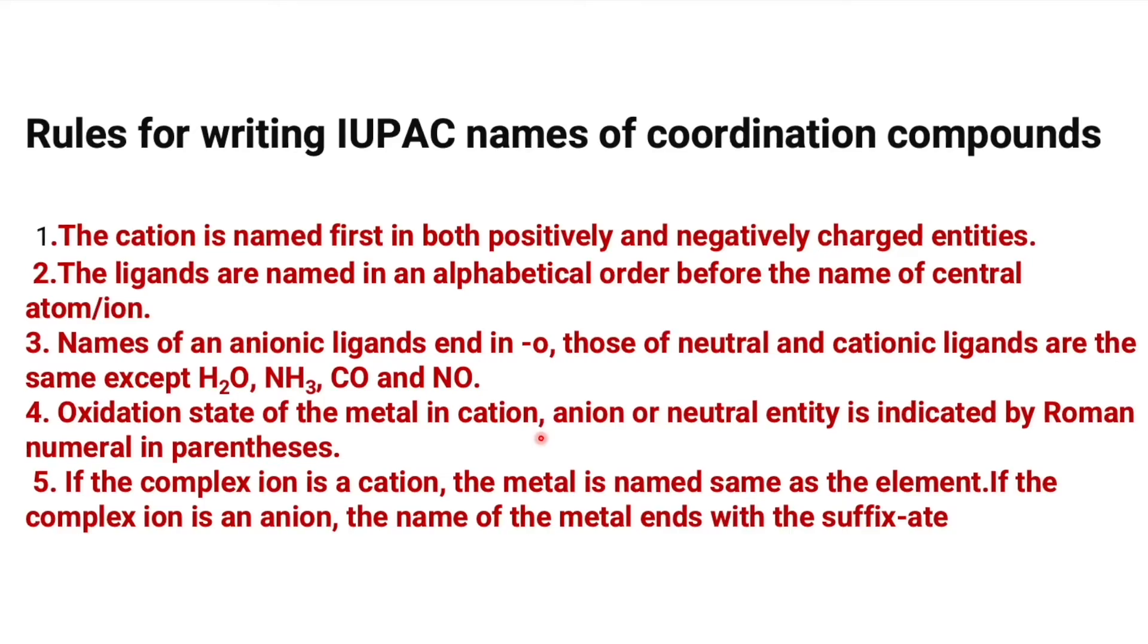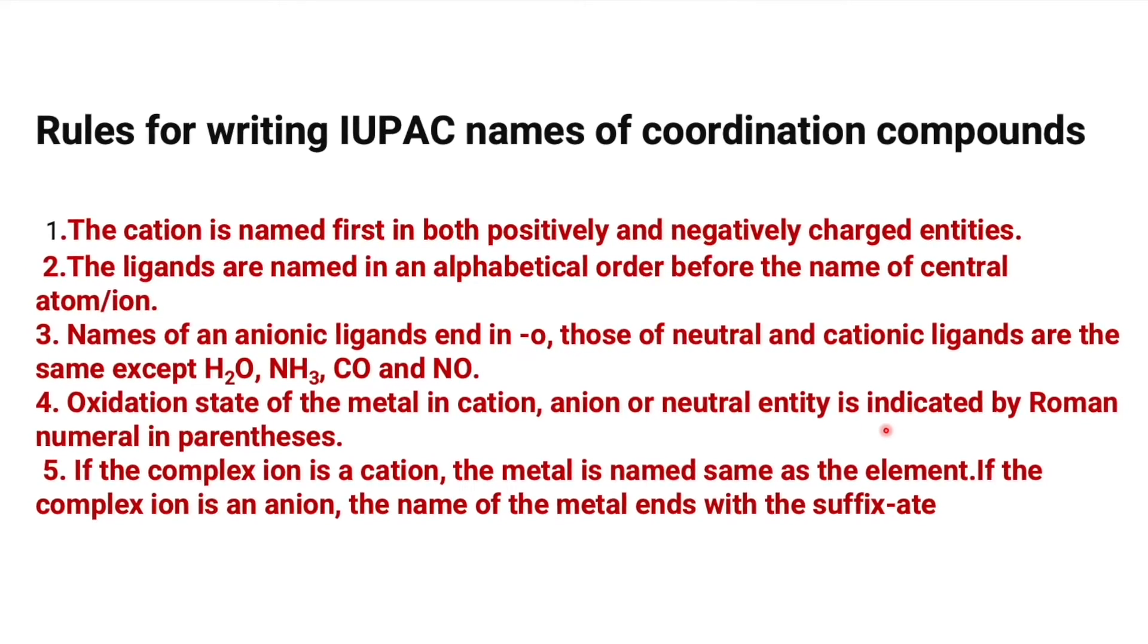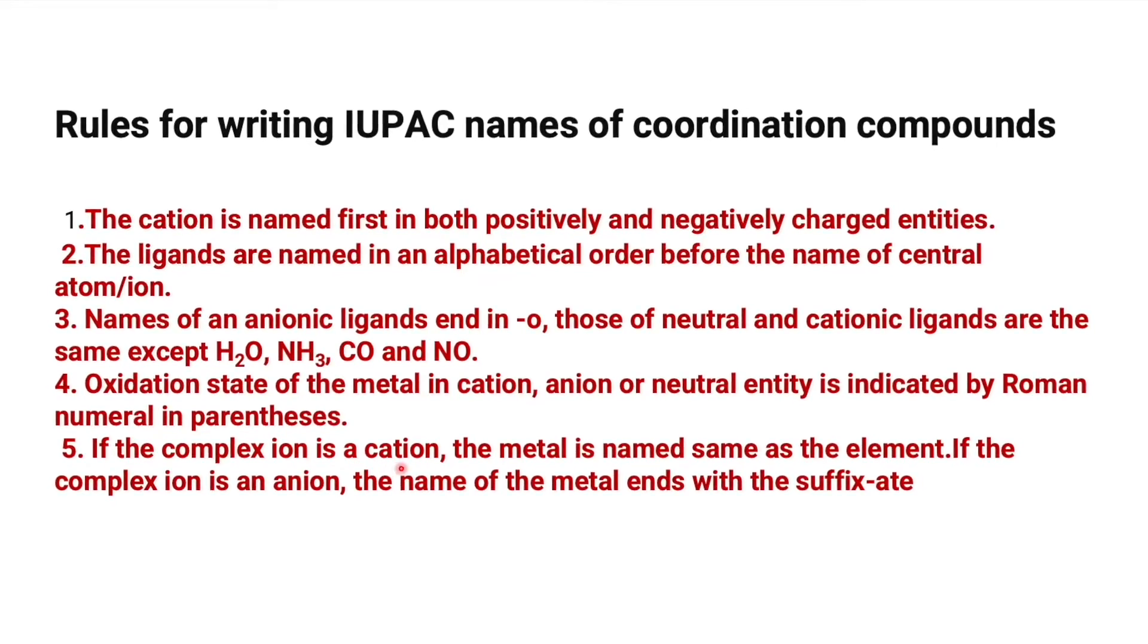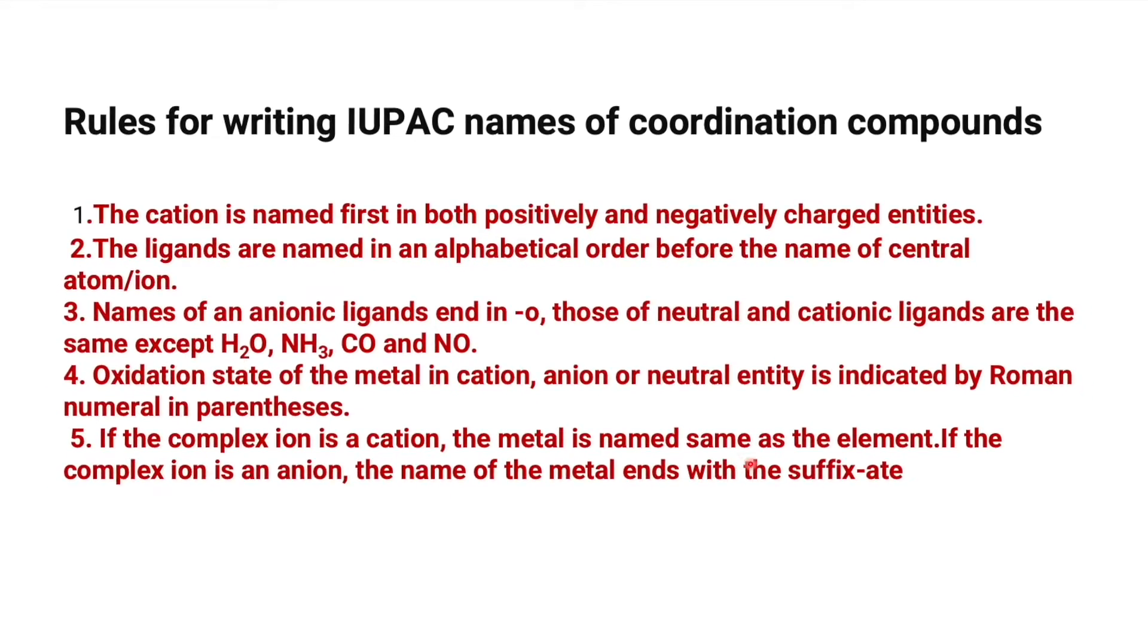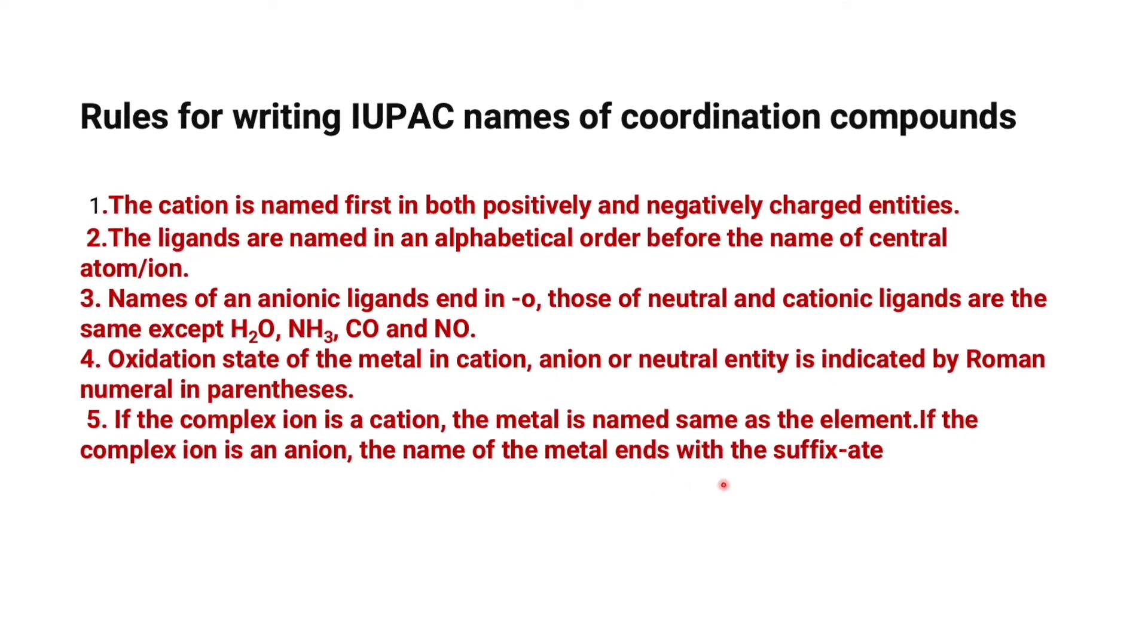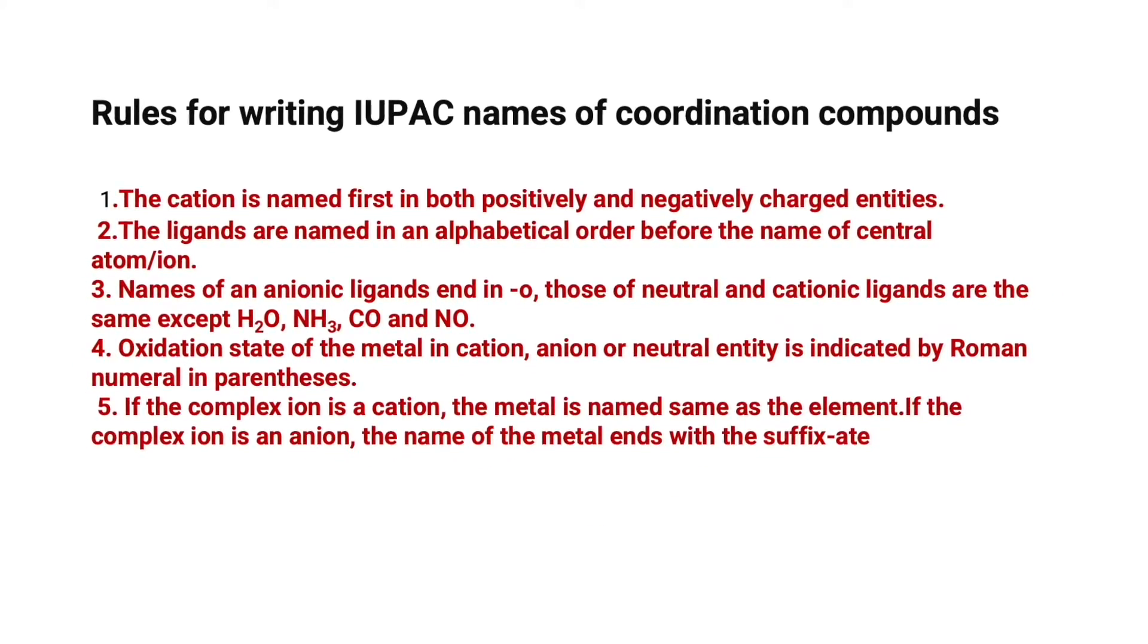Names of anionic ligands end in O. Oxidation state of the metal in cation, anion, or neutral entity is indicated by Roman numeral in parentheses. If the complex ion is a cation, the metal is named same as the element. If the complex ion is an anion, the name of the metal ends with the suffix -ate.